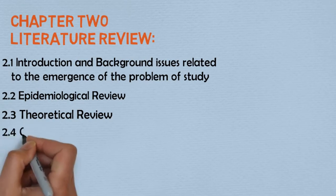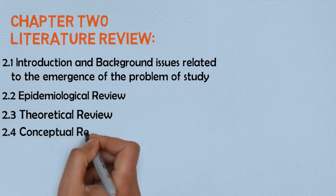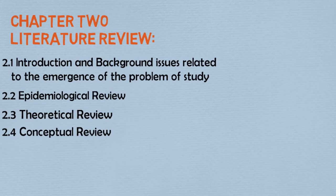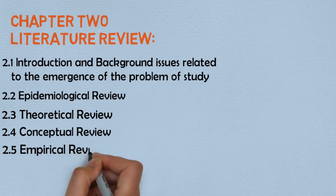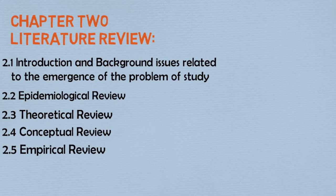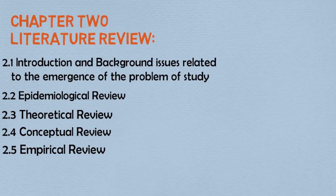The next review under the literature review is the conceptual review. This section contextualizes the problem phenomena within the public health domain at the level of prevention, facilitating identification of the diagnosis and level of prevention of the problem. The last review under the literature review is the empirical review. This section should provide sound empirical evidence for the epidemiological, theoretical, and conceptual narratives, and facilitate confirmation of the areas where gaps exist requiring attention. As a scoping review, it applies systematic review methods with critical appraisal of observational, experimental, interventional studies and reviews.